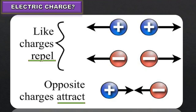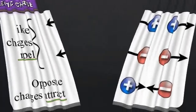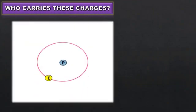But what exactly is charge, or in other words, who actually carries these charges? Well, these charges are carried by tiny particles with incredibly small mass. They are called subatomic particles.